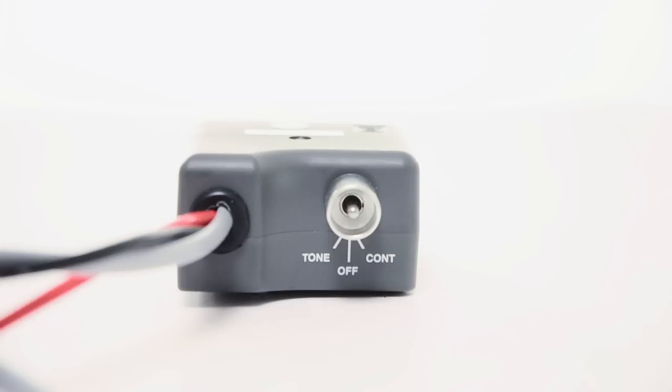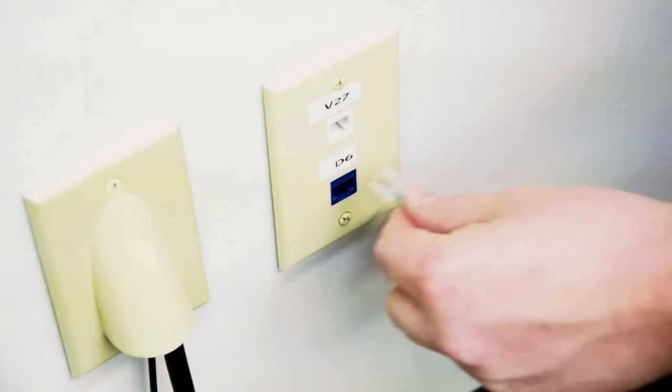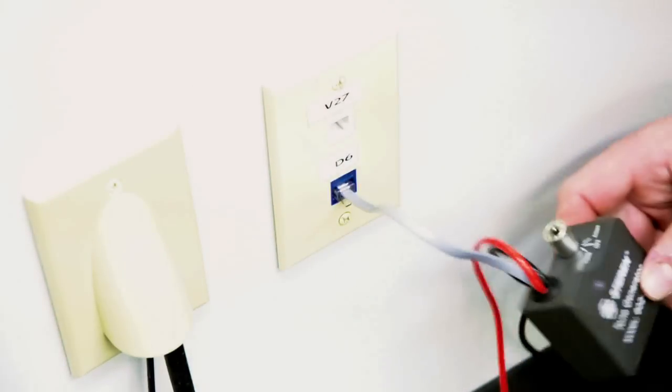The tone generator has a switch with three different options: tone, off, and continuity. When switched to tone, the probe will produce a sound to identify the cable. For example, if you plug the RJ45 into the circuit you want to test, the tone generator will send a tone down the cable.